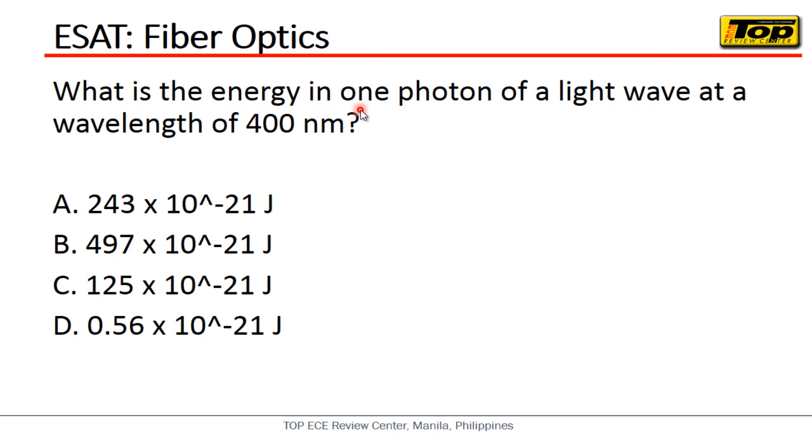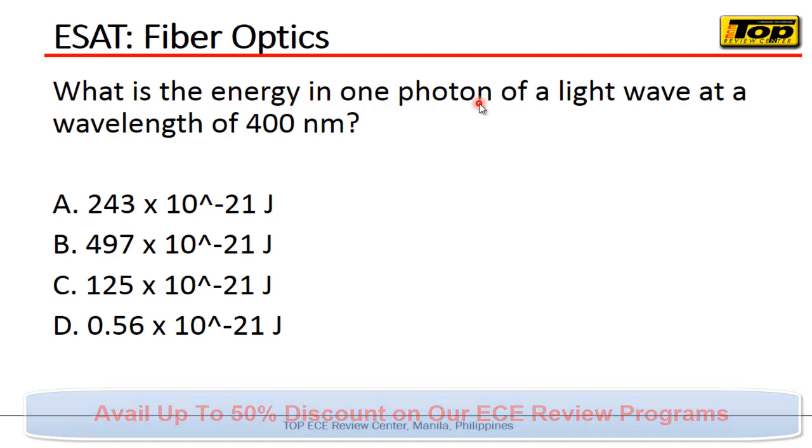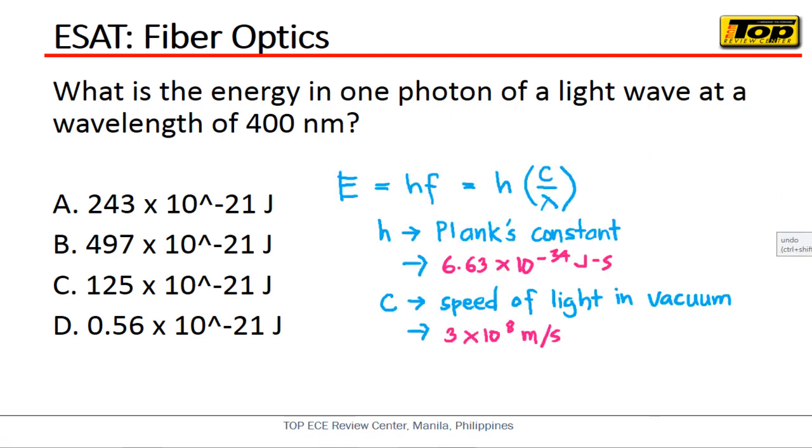What is the energy in one photon of a light wave at a wavelength of 400 nanometers? Okay, so what we're looking for here is the energy. So how do we solve for the energy of one photon at a wavelength of 400 nanometers?